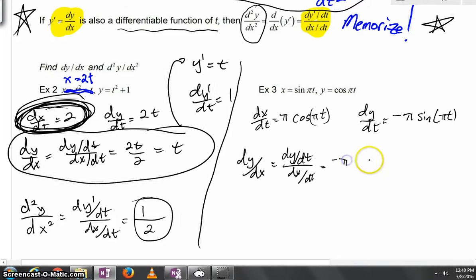So dy dx is going to be dy dt over dx dt. And if we were to work that out, you can see pretty quickly, we'd get negative pi sine of pi t all over pi cosine of pi t. Now, happily, the pi's are going to cancel out, and you could even more simply write that as negative tangent of pi t. In fact, that would be preferred.